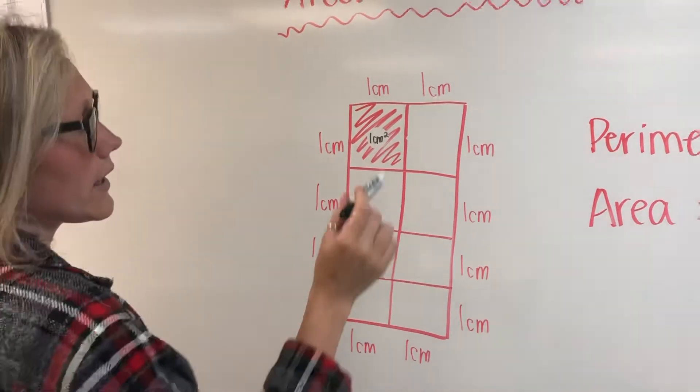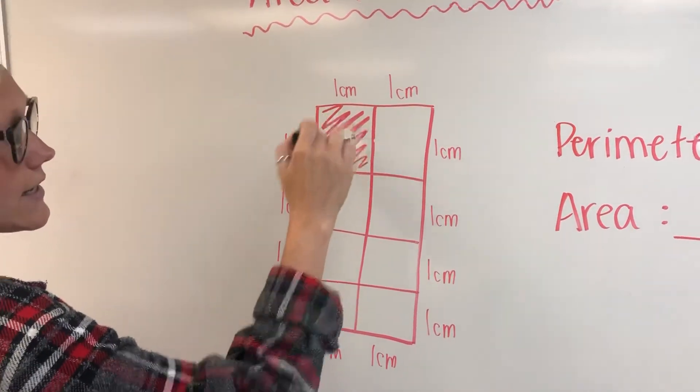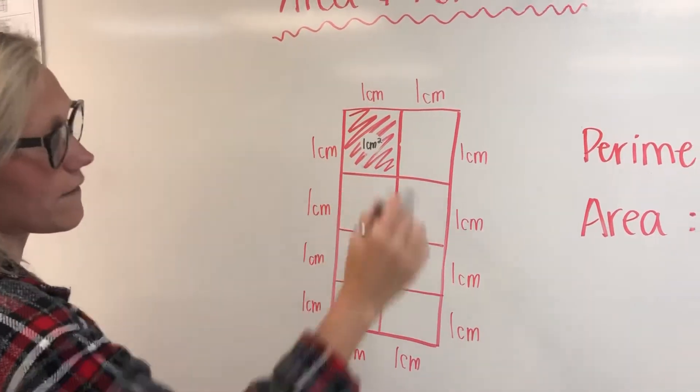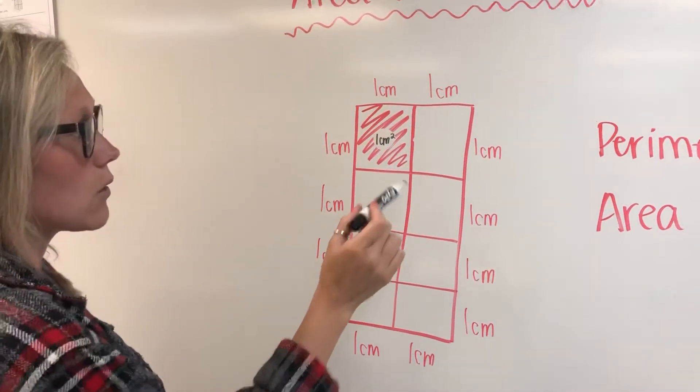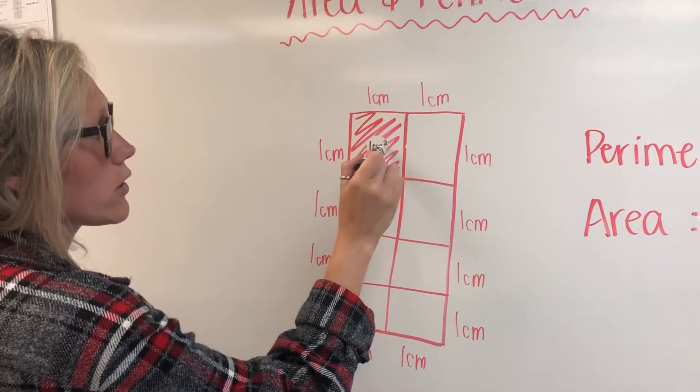Now each box here inside is the area. This is the number of square units that can fit inside an object. We know that one of these boxes is one centimeter squared.